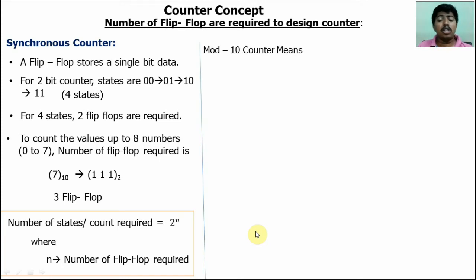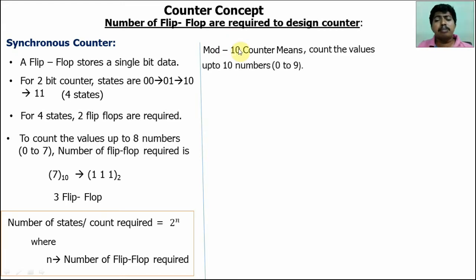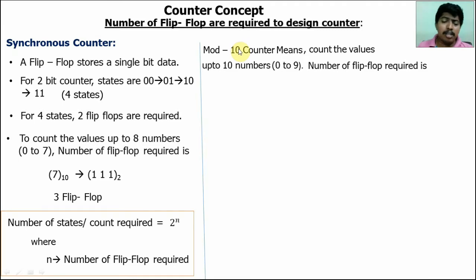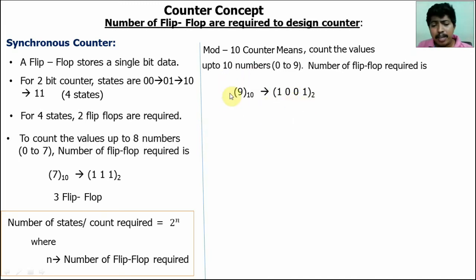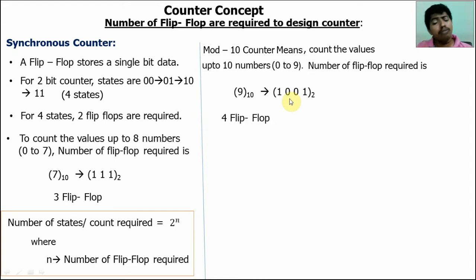Mod 10 counter: the 10 represents 10 number of states, meaning numbers 0 to 9. The maximum number in this state is 9. Applying the same concept, convert 9 to binary: the equivalent binary is 1001. To represent this maximum number, four digits are required, so four flip-flops are required. For the mod 10 counter, minimum four flip-flops are required. We may use five, six, or seven flip-flops, but four is the minimum.